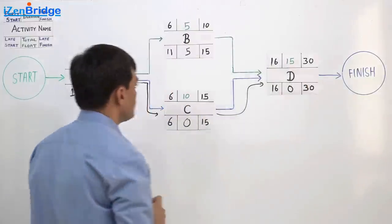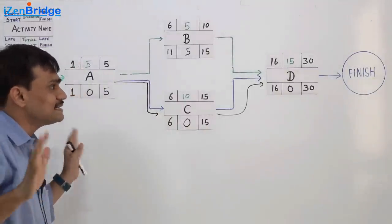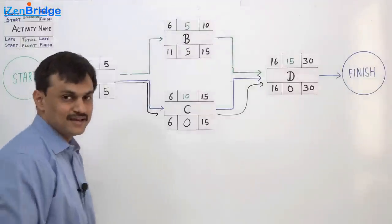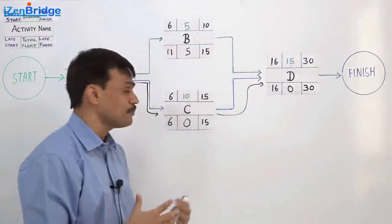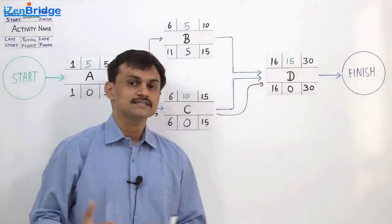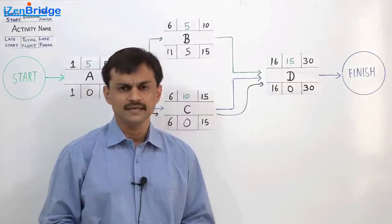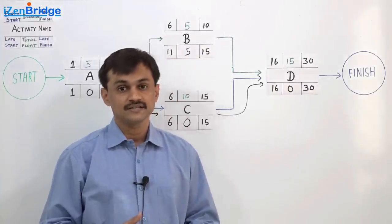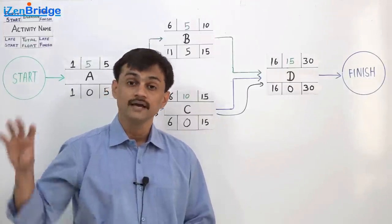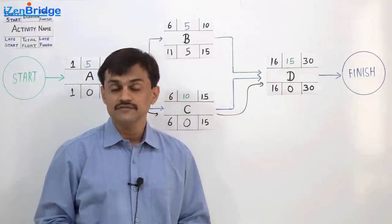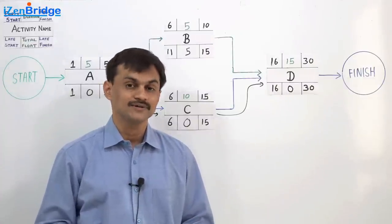The total float shows flexibility — activities on the critical path have no flexibility, just like the slowest eater at the table who cannot slow down further without delaying everyone. This was a simple example; you may practice with more complex ones. In the PMP exam, you need to understand these concepts and may face numerical questions asking you to identify the critical path, which activities have float, or which have zero flexibility.